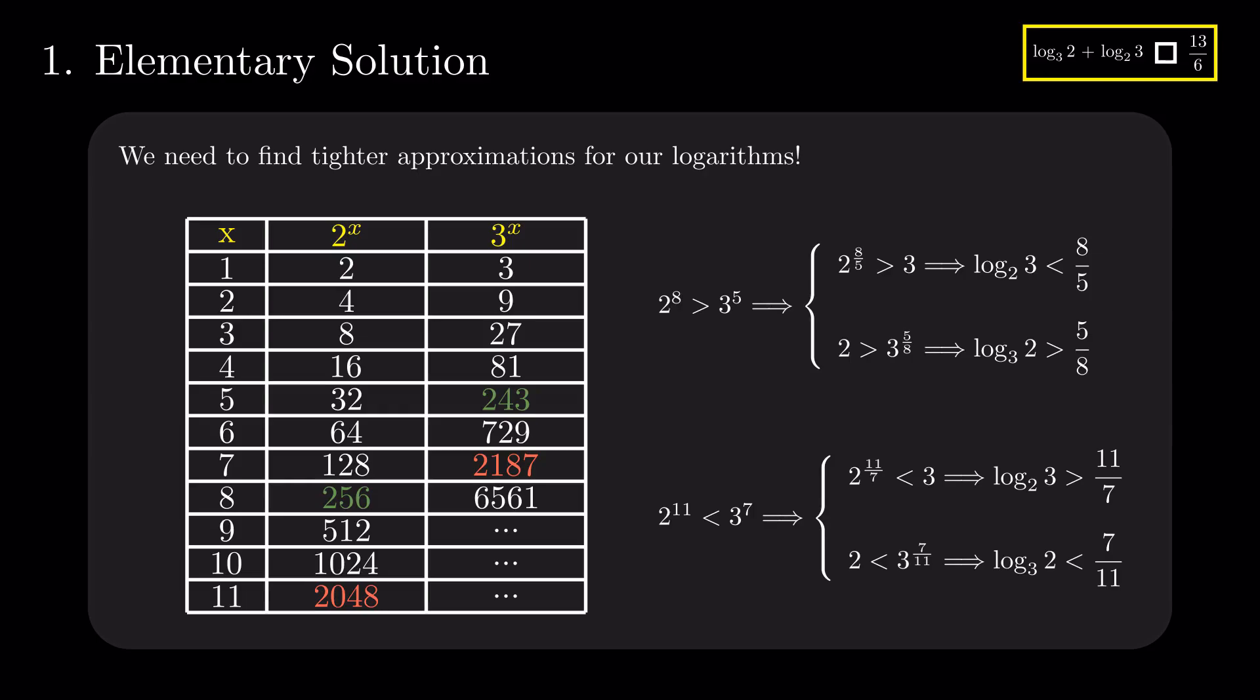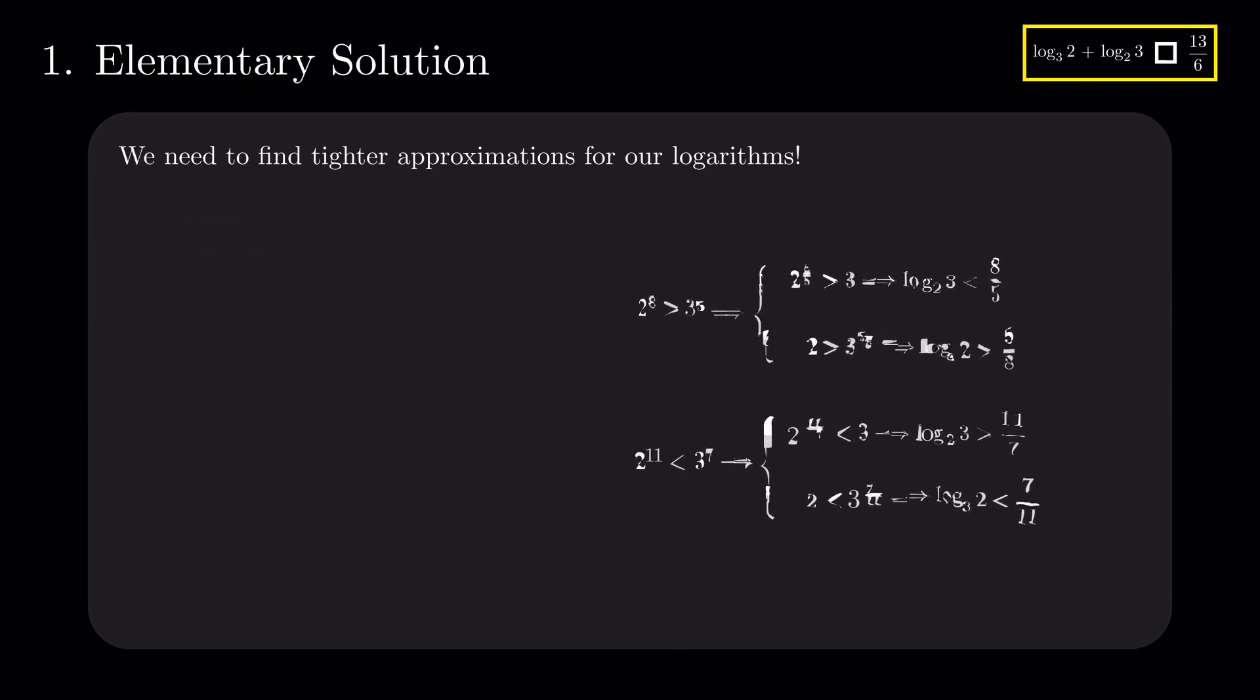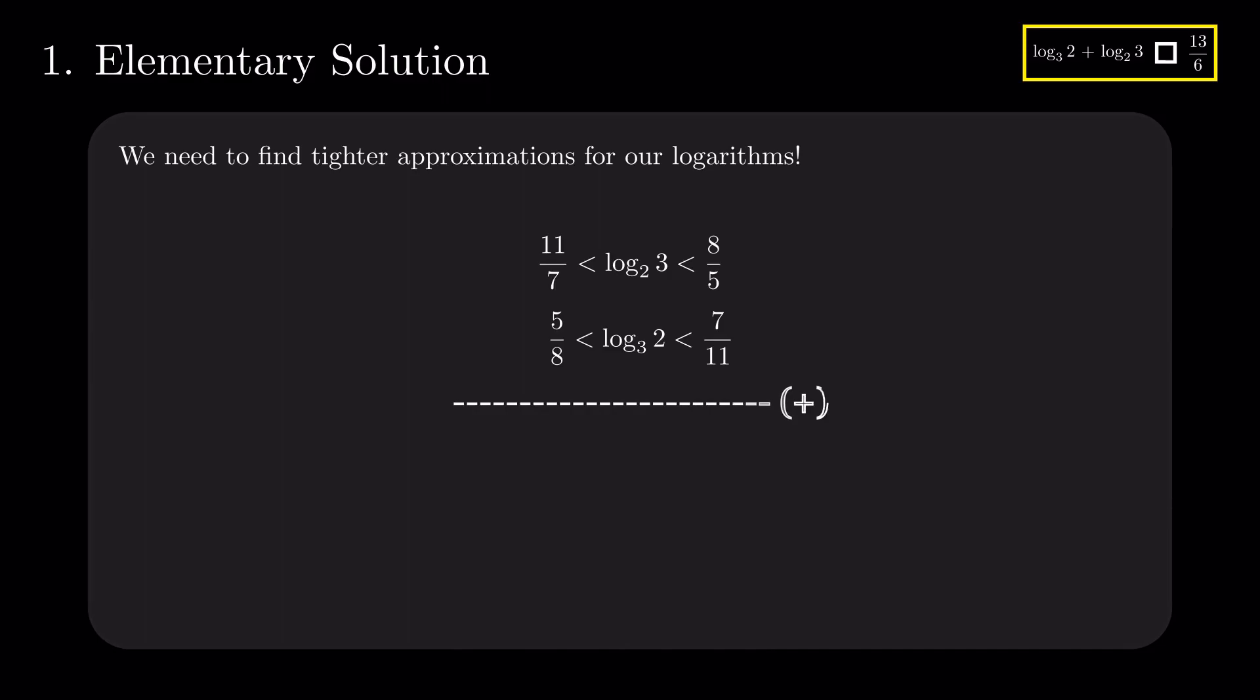Armed with these approximations, are they enough to compare the sum of logarithms with 13 divided by 6? By summing, we get that log base 2 of 3 plus log base 3 of 2 is greater than 123 divided by 56 and less than 123 divided by 55.